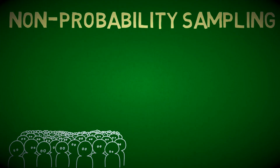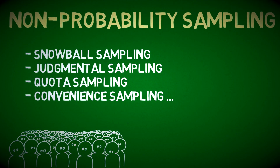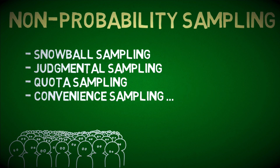On the other hand, convenience sampling is a non-probability sampling method. Simply put, in convenience sampling, the researcher would essentially do whatever is easy, efficient, and convenient in order to obtain a desired sample. Although that might be a bit of an oversimplification, that's roughly the idea.